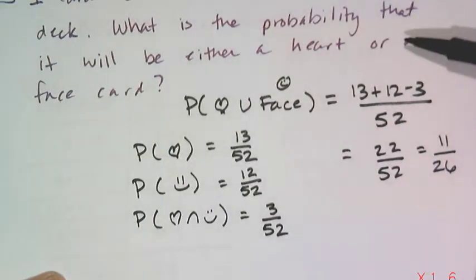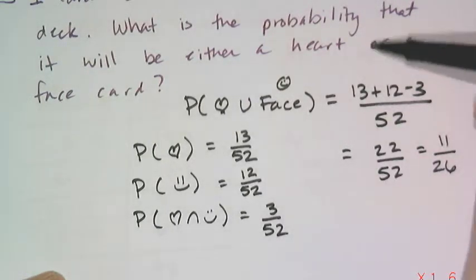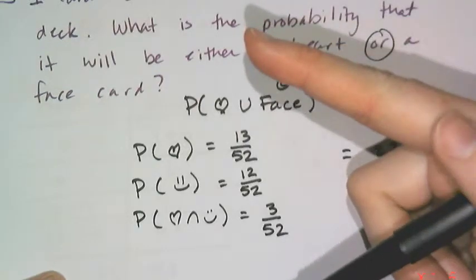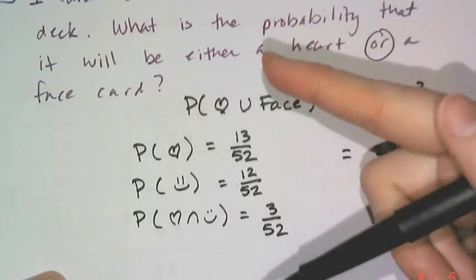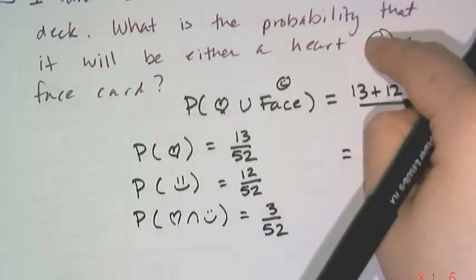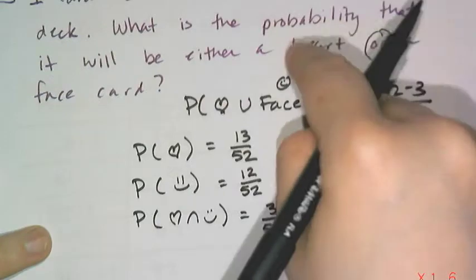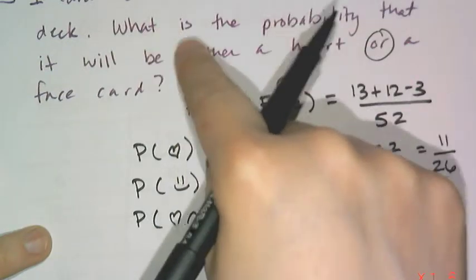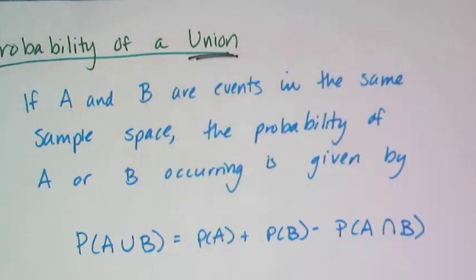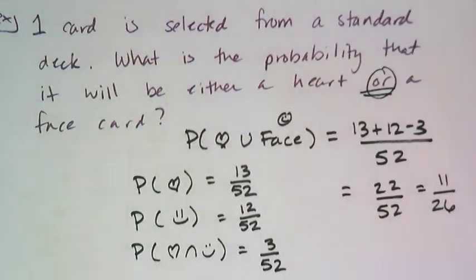You must read your questions very carefully, because OR is very different than AND, which you should have remembered from the inequalities unit. OR means I want one or the other. If I had said AND, then that's a much easier question, because if I want to know the probability that it's a heart and a face card, then that's just 3 out of 52, because I only have 3 of those. But the word OR changed this to being a union problem, which requires me to subtract off the intersection.